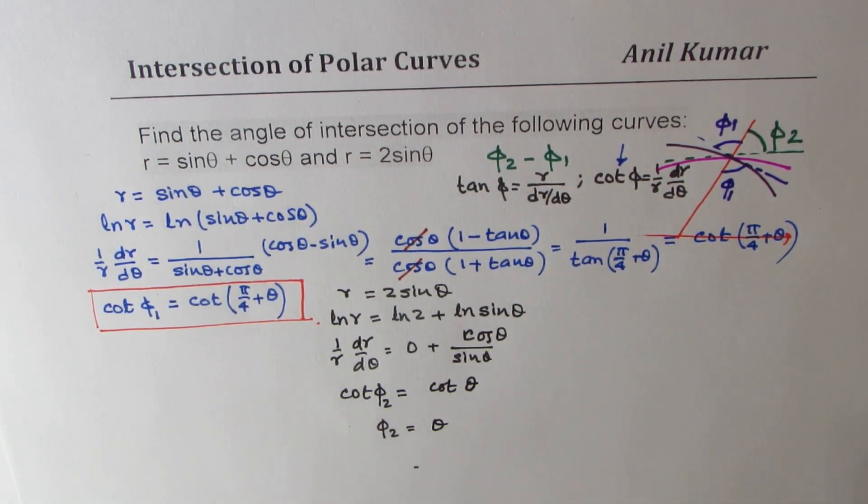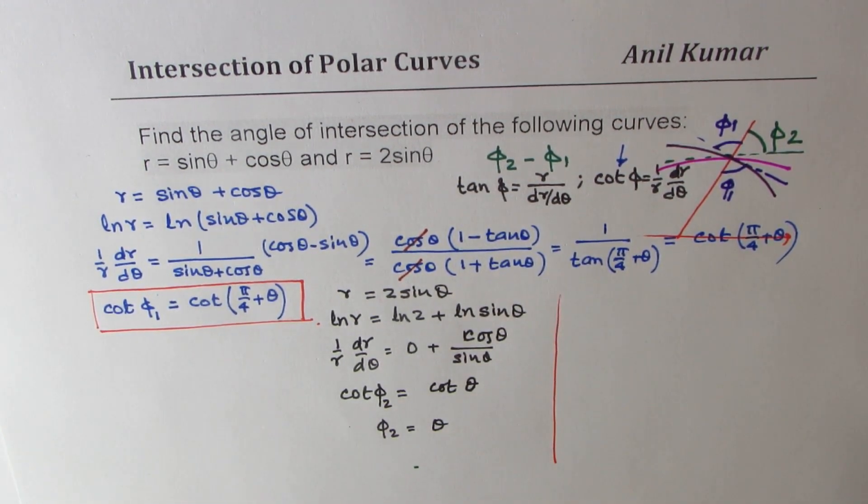So we get this phi 2 and phi 1. And so what is the angle between the two curves? Difference of the two.